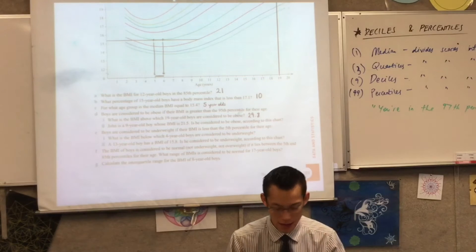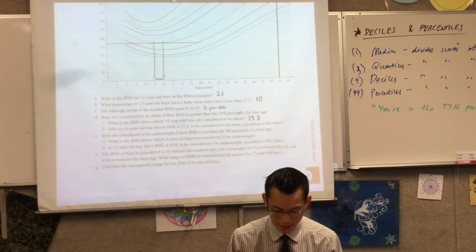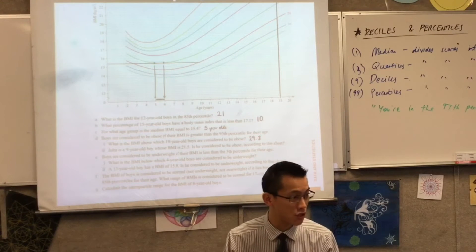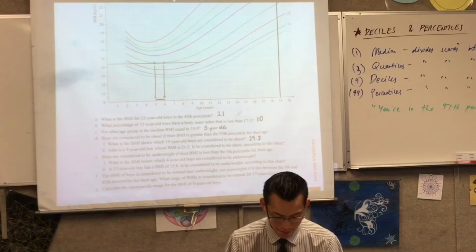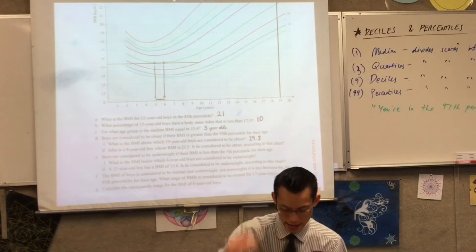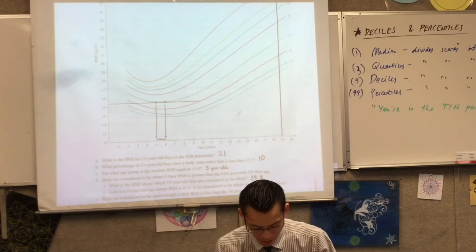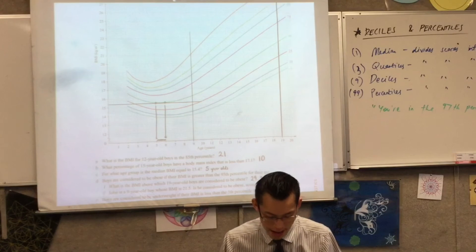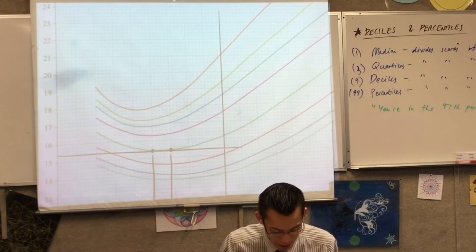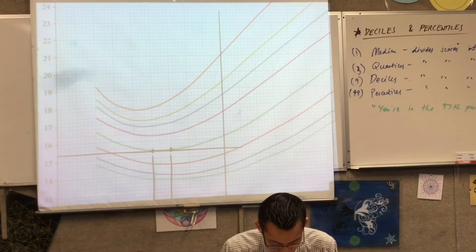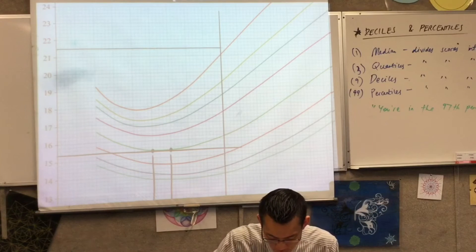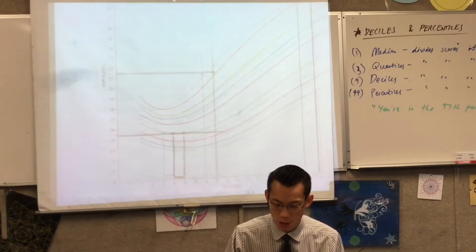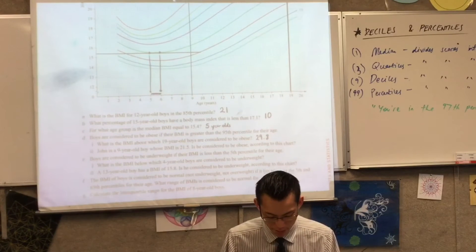Let's talk about this nine-year-old. His BMI is 21.5. Is he considered obese according to this chart? I'm going to look for his age and his BMI and see where he's rated. Here's my vertical line up from nine years old, and when I look for where 21.5 is — that's halfway between 21 and 22 — you can see as I draw it across, there he is right there. So is he above the 95th percentile? Yes. According to this chart, they would classify him as obese.